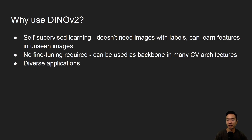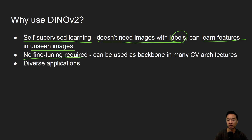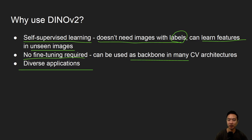So why use DINOv2? One of the main things is that it uses self-supervised learning, so you don't need images with labels — and we all know how painful labeling can be. You can learn features from unseen images without any fine-tuning, and you can use the backbone in a lot of your computer vision architectures. There are a lot of diverse applications for DINOv2 beyond just feature detection and feature matching.